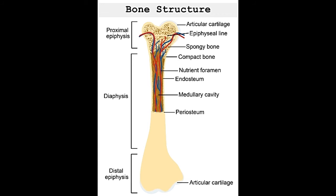As we grow, the cartilage calcifies to form new bone tissue, thereby allowing the bones to lengthen. Periosteum refers to a double-layered fibrous membrane of connective tissue that covers the outer surface of the bone, with the exception of the articular surfaces. The intramedullary cavities of the long bones are lined by a connective tissue called endosteum, which also covers the canals passing through the compact bone.